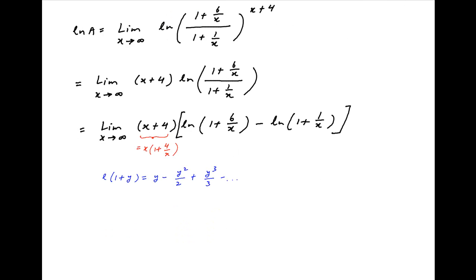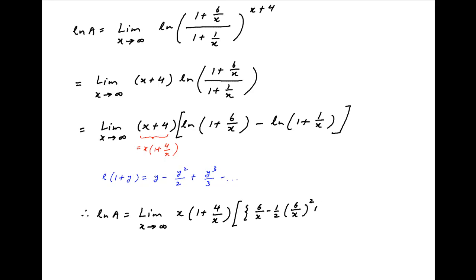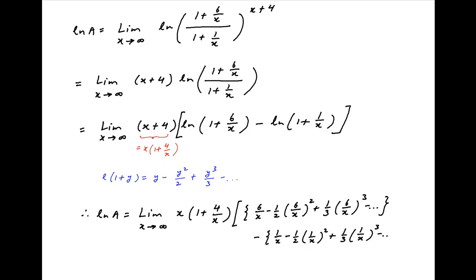Using this result, ln a equals the limit as x tends to infinity of x times (1 plus 4 upon x) multiplied by: ln(1 plus 6 upon x), which expands as (6 upon x) minus half of (6 upon x) squared plus one-third of (6 upon x) cubed and so on, minus ln(1 plus 1 upon x), which expands as (1 upon x) minus half of (1 upon x) squared plus one-third of (1 upon x) cubed and so on.